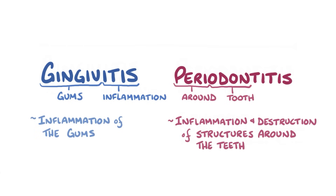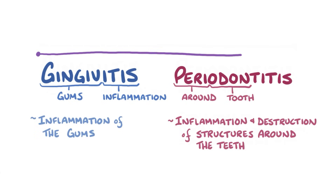Broadly speaking, the two are on a spectrum, starting with simple gingivitis on one end, and if the process doesn't get treated, it can develop into more severe disease — periodontitis — which is on the other end of the spectrum.